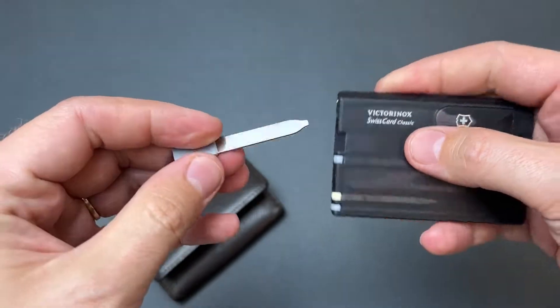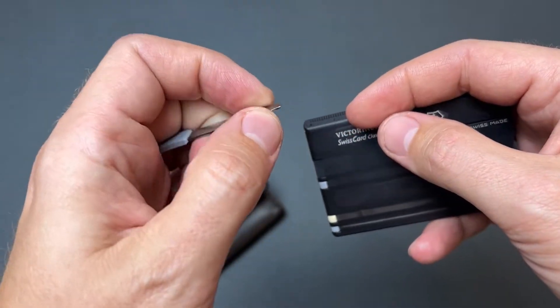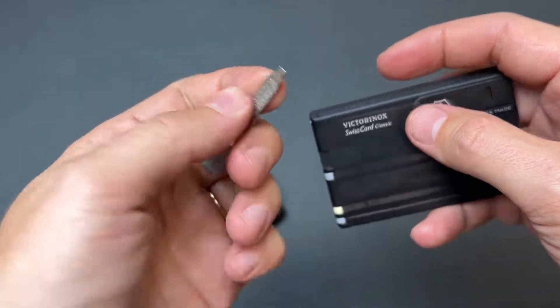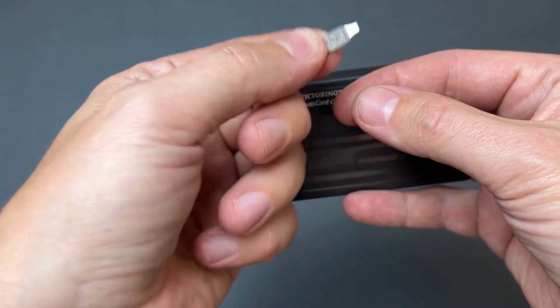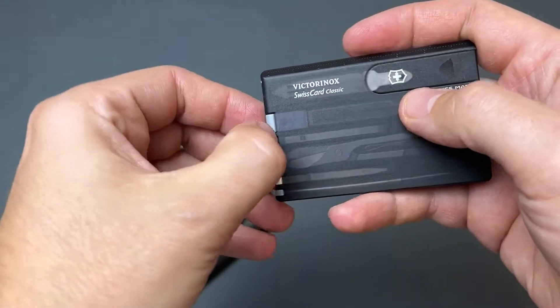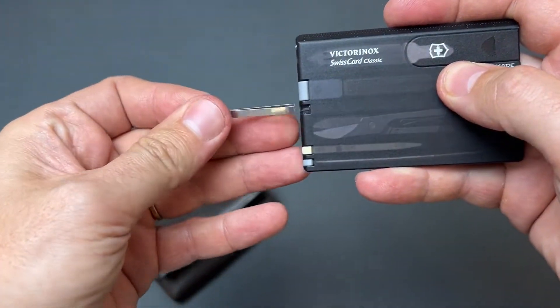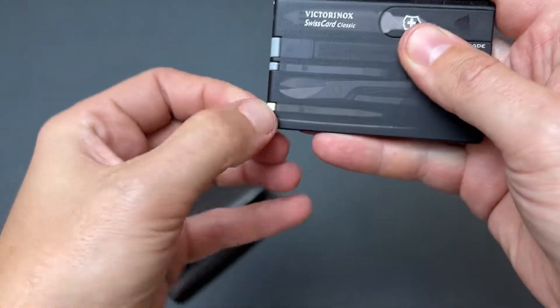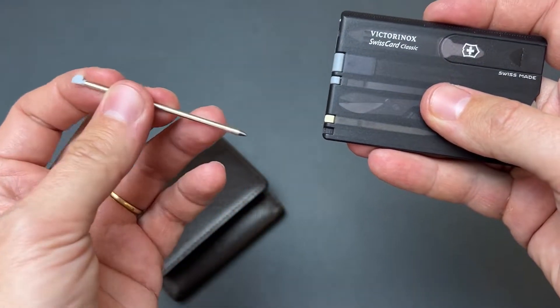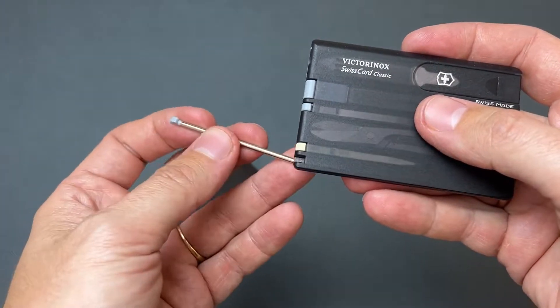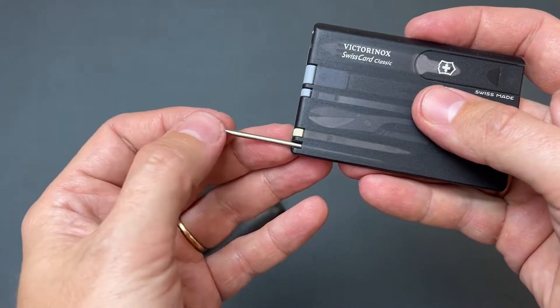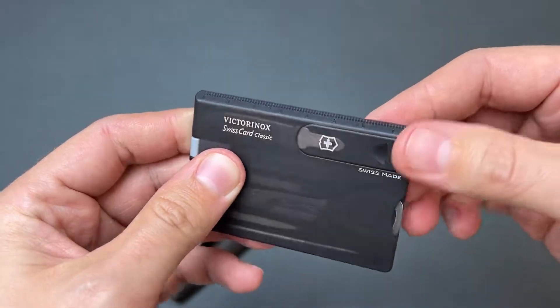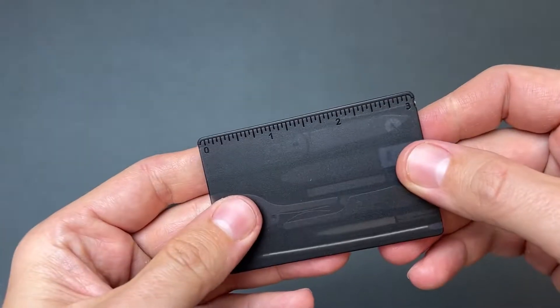Also it has a small file combined with a small Phillips head driver. You can also catch dirt under your nails if you have it. Small tweezers, classic Victorinox tweezers, toothpick, and a very useful pen. So if you forget your pen and need to sign documents, your wallet will always be with you. It also has a ruler in centimeters and inches.